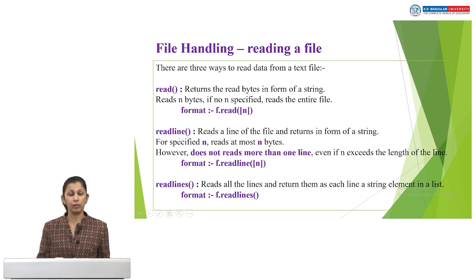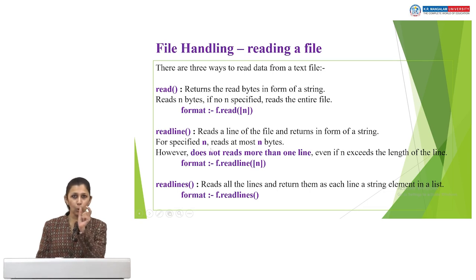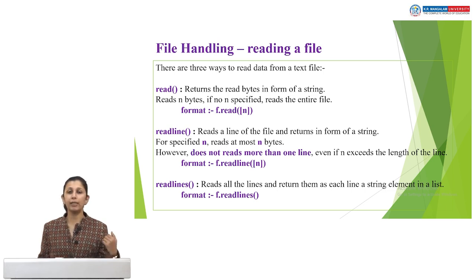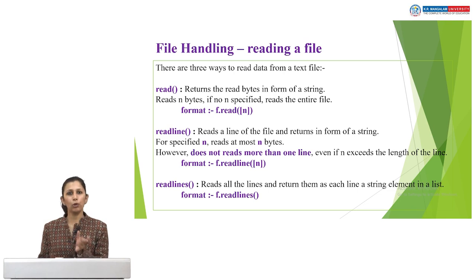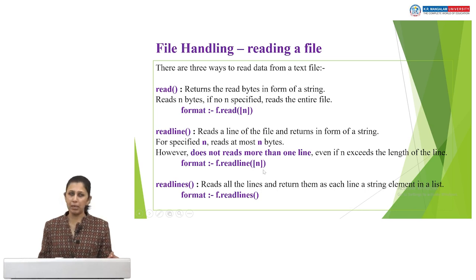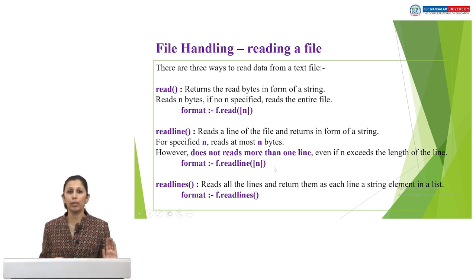The readline() function reads one line of the file and returns it as a string. The n parameter specifies up to which byte to read the line, but it will read only one line at a time — that is the limitation of readline(). If your line has only five bytes (e.g., 'hello') but you pass n=10, it will still only print 'hello'. It does not read more than one line regardless of the n value.